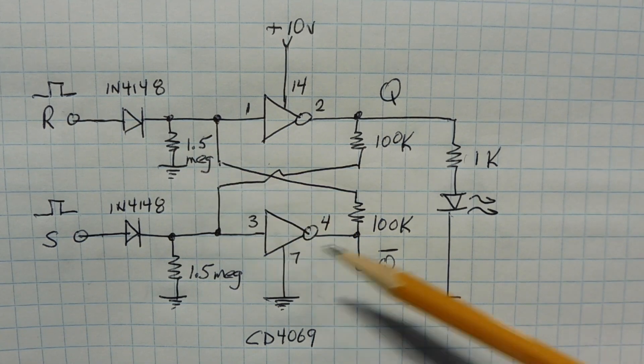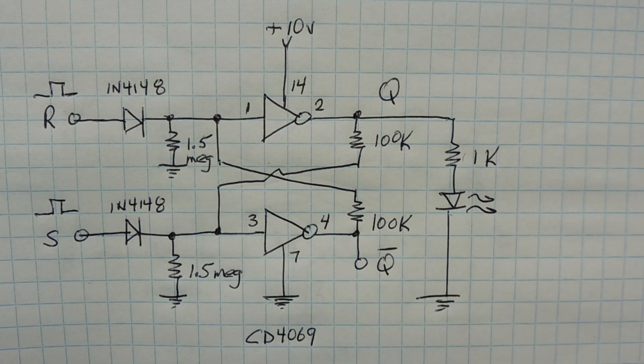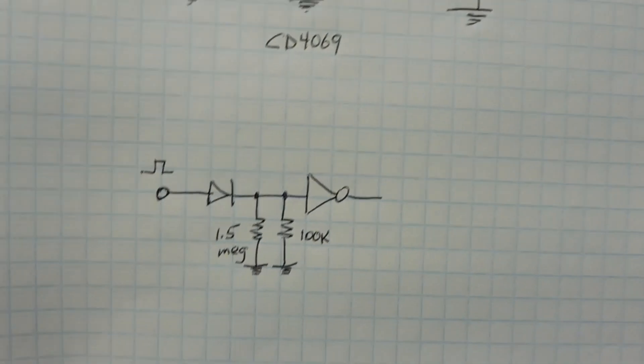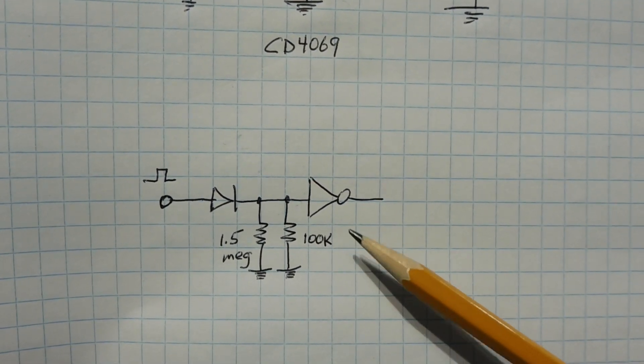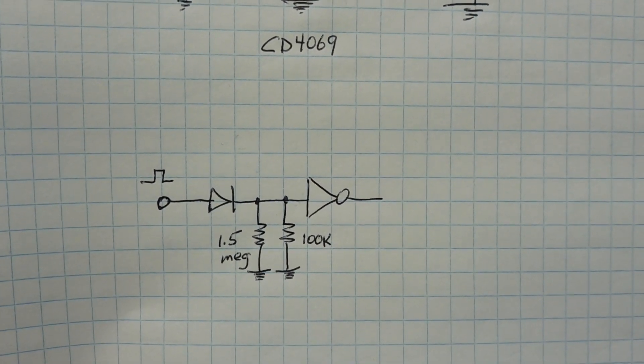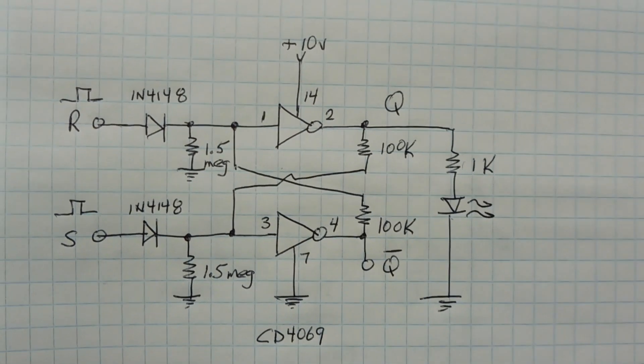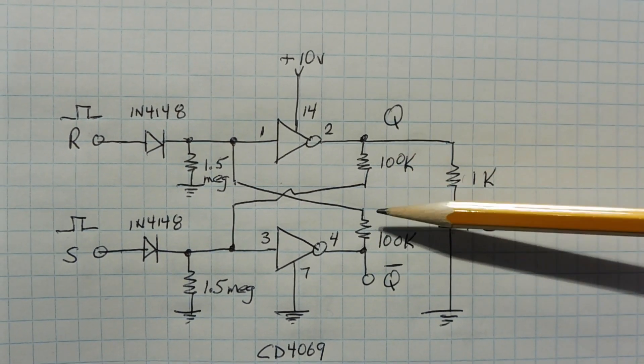So the load on the source that's driving our set and reset lines will be the diode, 1.5 mega ohm resistor and 100k ohm resistor when this point is at ground level. So the total load will look like this to our source. So it's about 100k ohms, our impedance would be about 100k ohms. So if you have a circuit that could drive 100k ohms, then it would be no problem. If not, you could just increase the value of these two resistors.